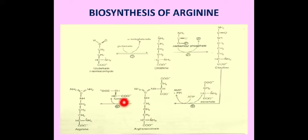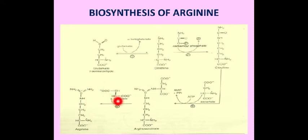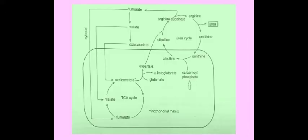In the last step, argininosuccinate is cleaved to produce fumarate and arginine. Thus, arginine is synthesized from glutamate-gamma-semialdehyde. Let us review this reaction once more, because part of it occurs in the cytosol and part in the mitochondrial matrix.